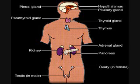Estrogen. Gland: Ovaries. Function: to stimulate the development of female sex characteristics and to help regulate the menstrual cycle.